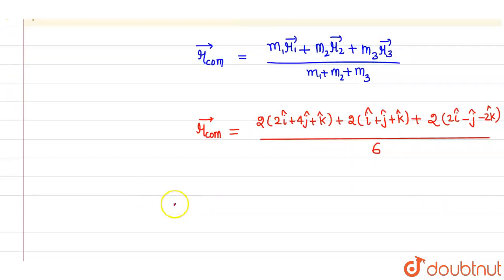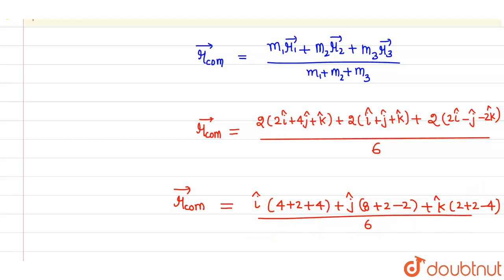Now we just have to simplify this. So r center of mass comes out to be i cap times (4 + 2 + 4), plus j cap times (8 + 2 - 2), plus k cap times (2 + 2 - 4), divided by 6.